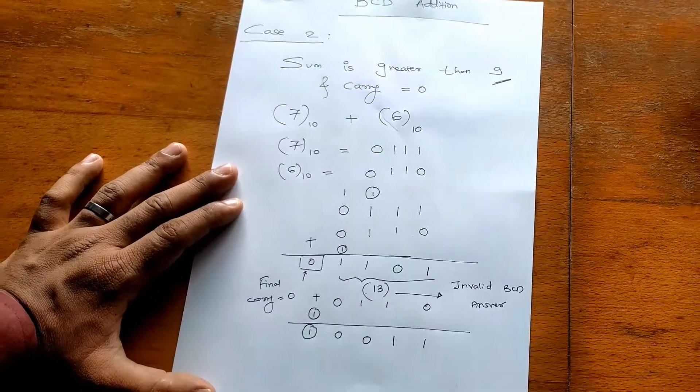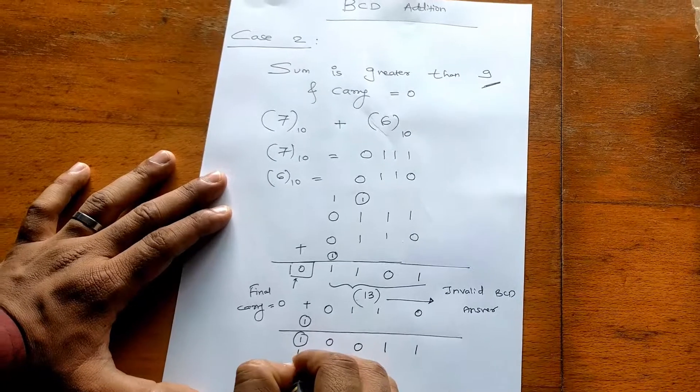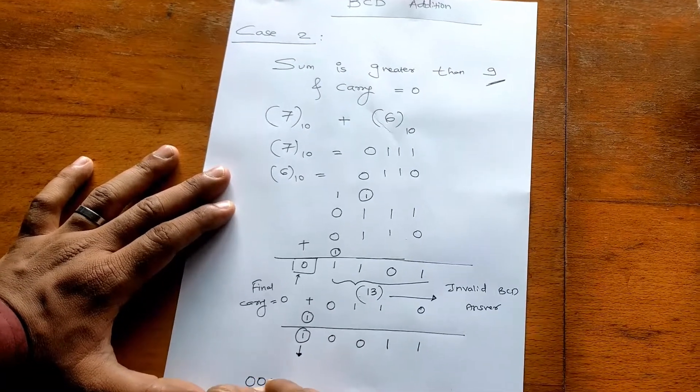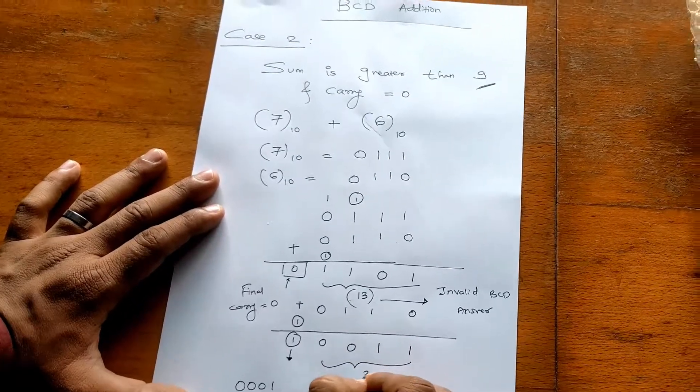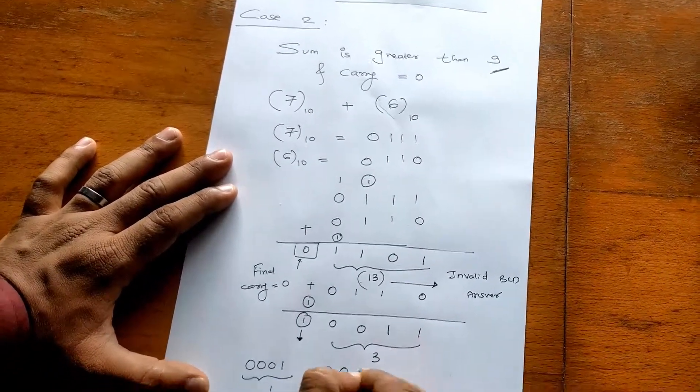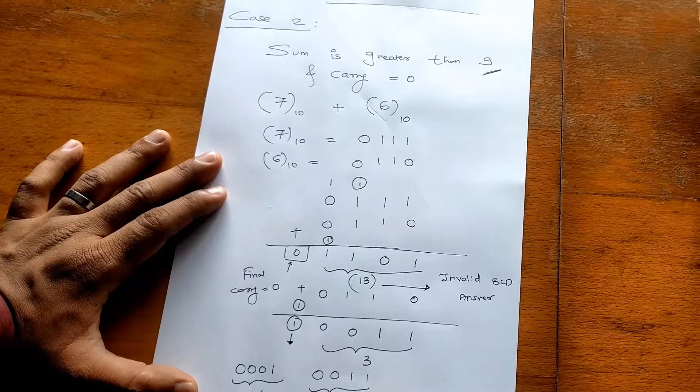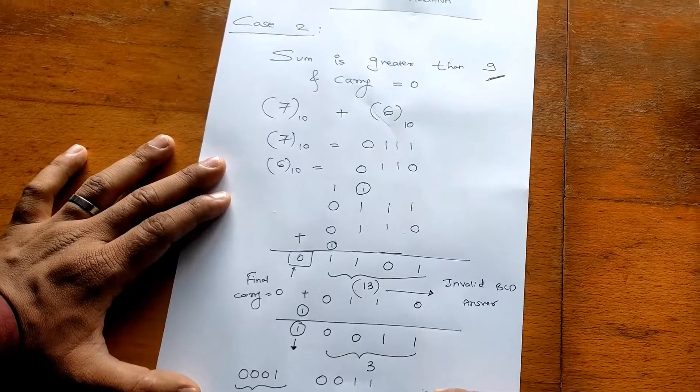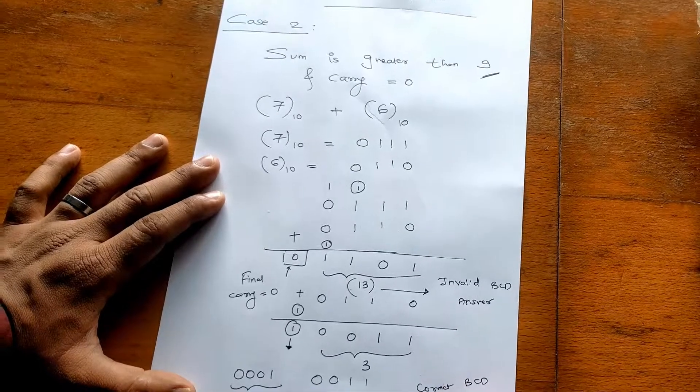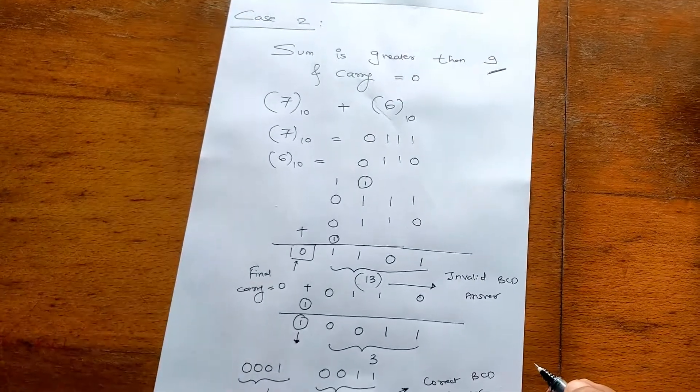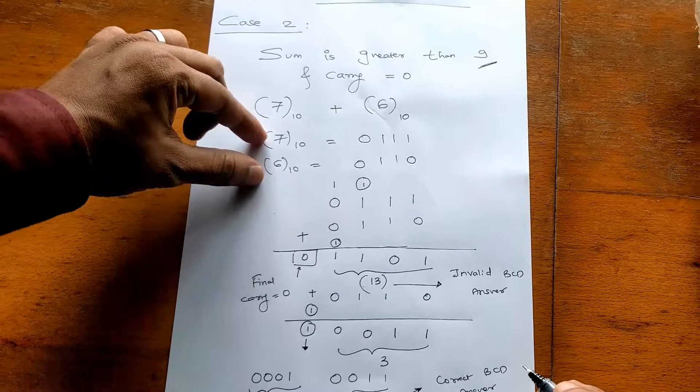Which we have to write as it is. In this case, this carry means 00001, that is 1, and this indicates 3. So that is 0011, that is 3. So now this answer is the correct BCD answer, or you can say it is in correct BCD format: 13, because 7 plus 6 is 13.